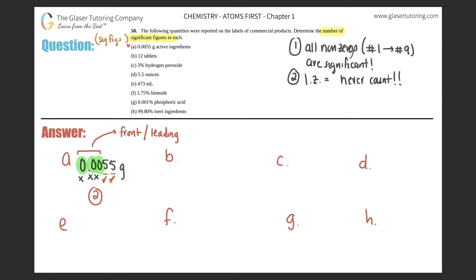B: 12 tablets. Here it's literally just a one and a two, they're both non-zeros so they both count. No zeros to worry about, so this one would have two sig figs. C is 3% hydrogen peroxide. There's only one number, it's just a three, and three is a non-zero so that counts. It would be one sig fig.